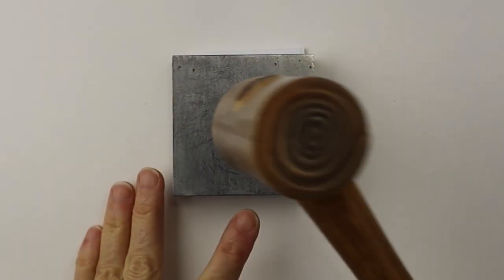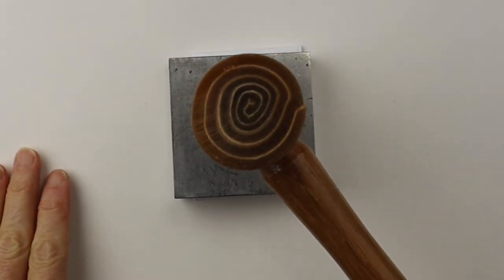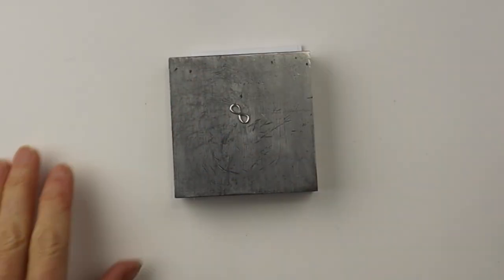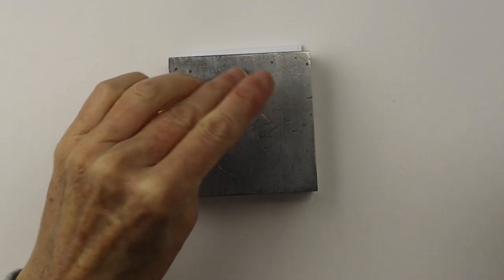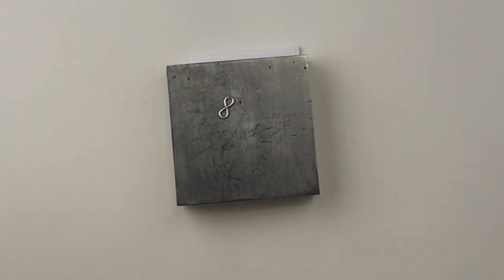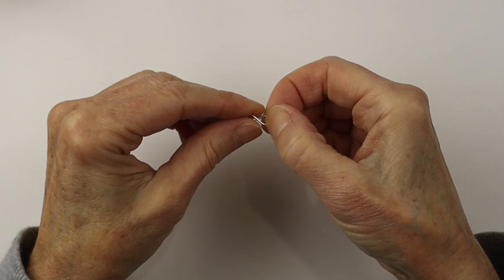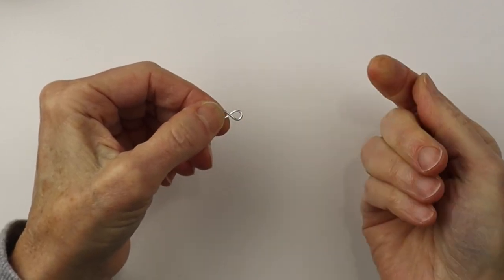So we have the first one and then we can also use the rawhide mallet if you don't want it as flat, just tap it a little bit to harden it up. So there we go, easy. You just need that steel block, you can get all these on Amazon. And then we have our nice little link with the infinity sign that is nice and strong.